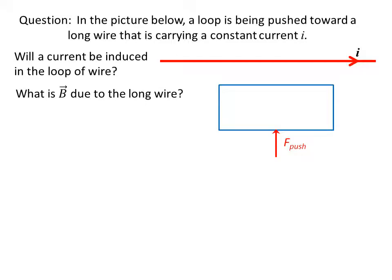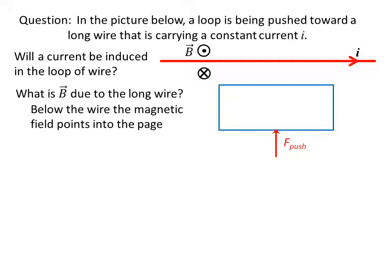The first question is: what is the magnetic field due to the long wire? Using the right-hand rule, putting our thumb in the direction of the current and curling our fingers, we find that the B field comes out of the page above the wire and goes into the page below the wire. So where the loop is, the magnetic field points into the page.